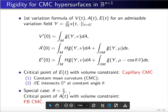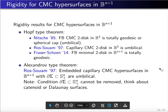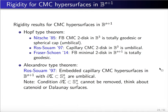In the special case theta equals pi over 2, the critical point of E is just the critical point of the area with volume constraint — the famous free boundary CMC surface.